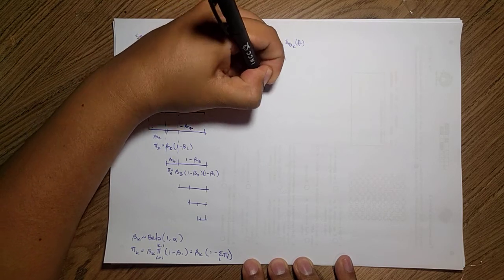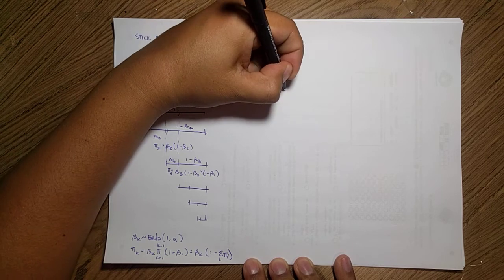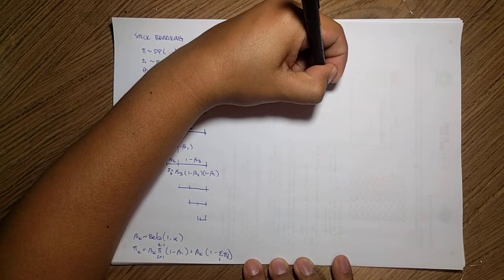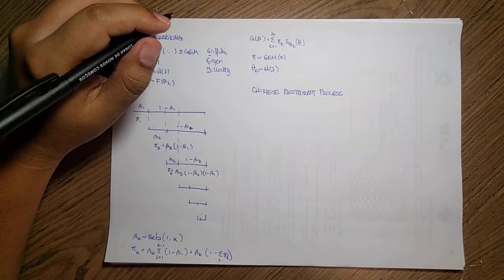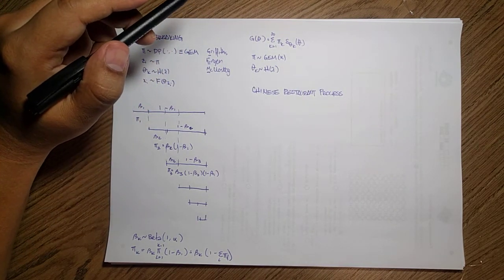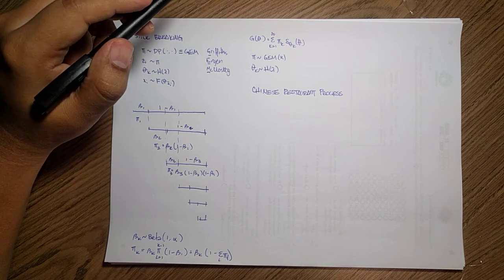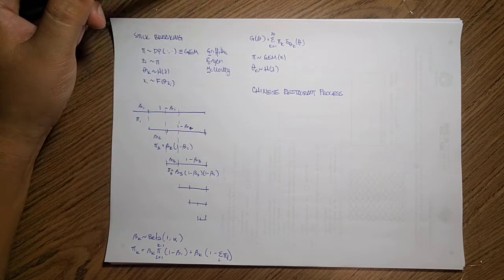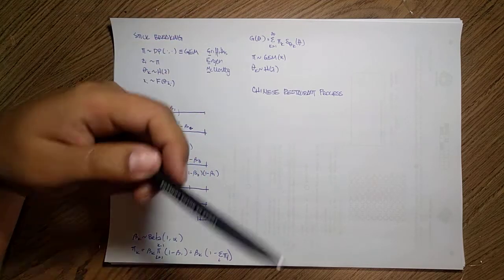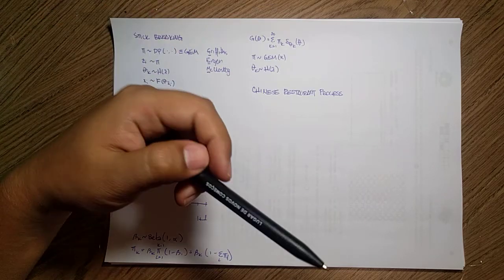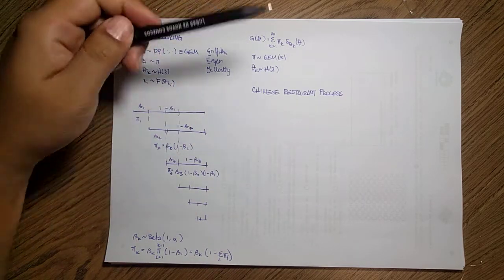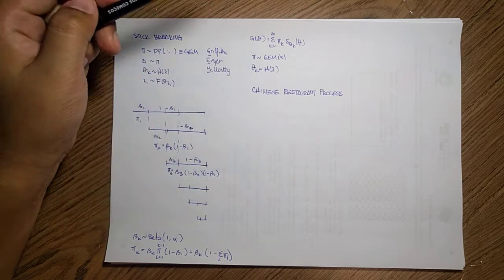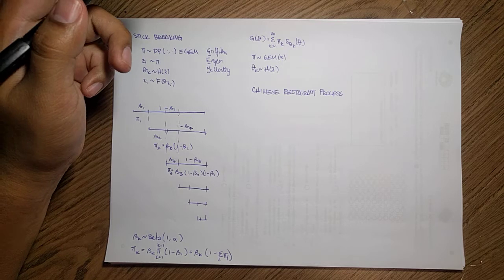There is another technique called the Chinese Restaurant Process. This comes from the idea that when you enter a Chinese restaurant, they always seem to have room for another table. The idea for clustering is: allow the data to check existing clusters — the existing tables — and see if they relate to the points there. If a point finds a cluster it likes, it stays; if it doesn't belong to any existing cluster, it can create a new one — open a new table.